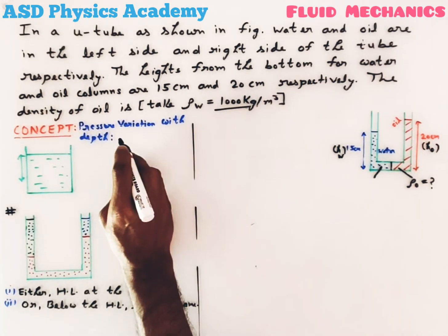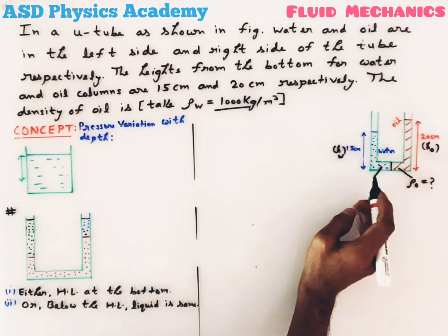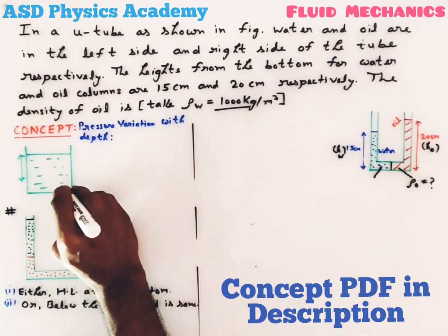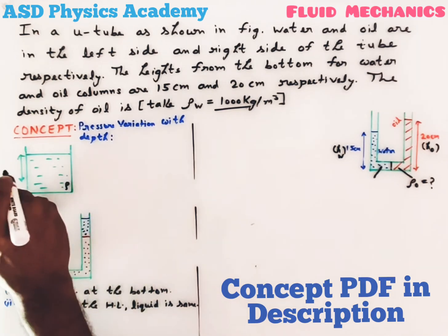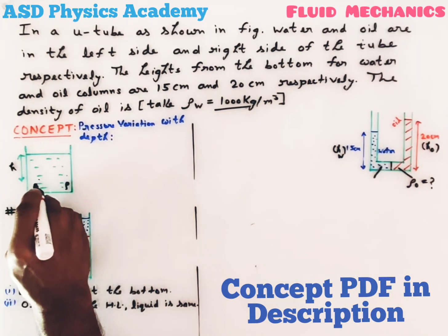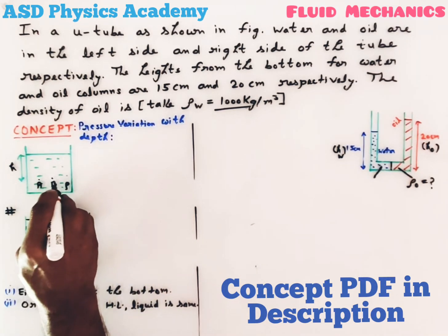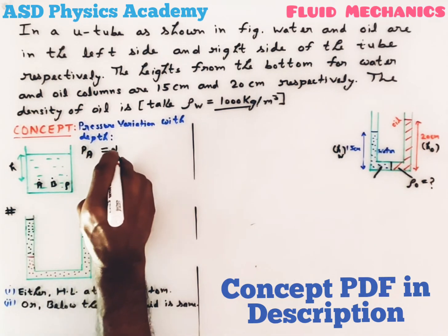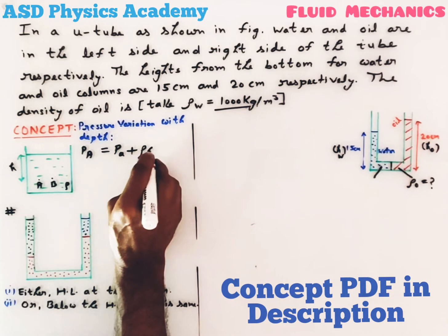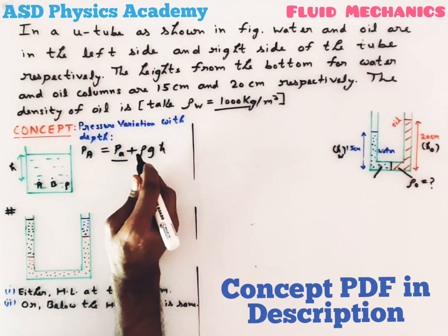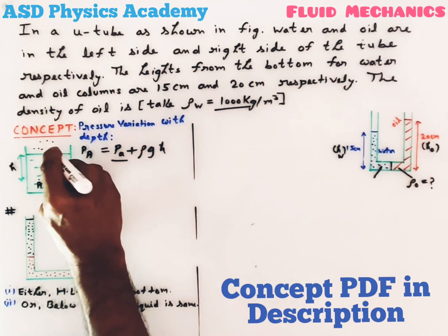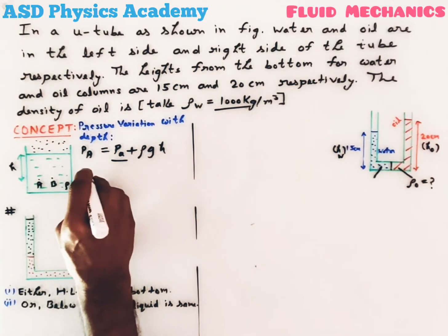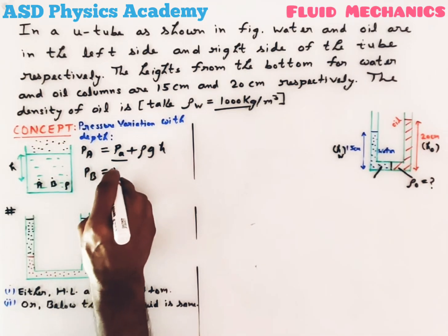We will use the pressure variation with depth concept to solve this question. For example, consider a container having a liquid of density ρ. At a depth h, I have taken two points A and B inside the liquid. The pressure at point A is given by P_a plus ρgh, where P_a is the atmospheric pressure due to the presence of air molecules on the surface of the liquid.